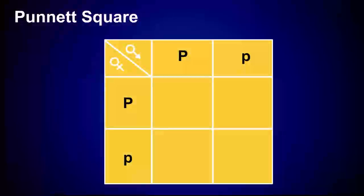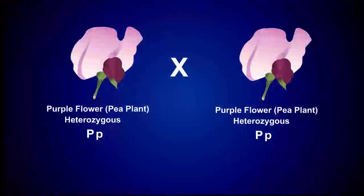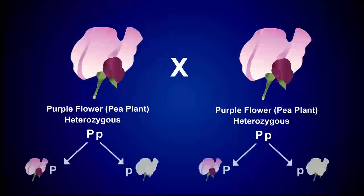A Punnett square is often used to better understand the patterns of inheritance associated with Mendelian genetics. Remember that each parent in a genetic cross is diploid, meaning that they have two copies of each trait. During meiosis, these traits separate into individual gametes, either egg or sperm cells.